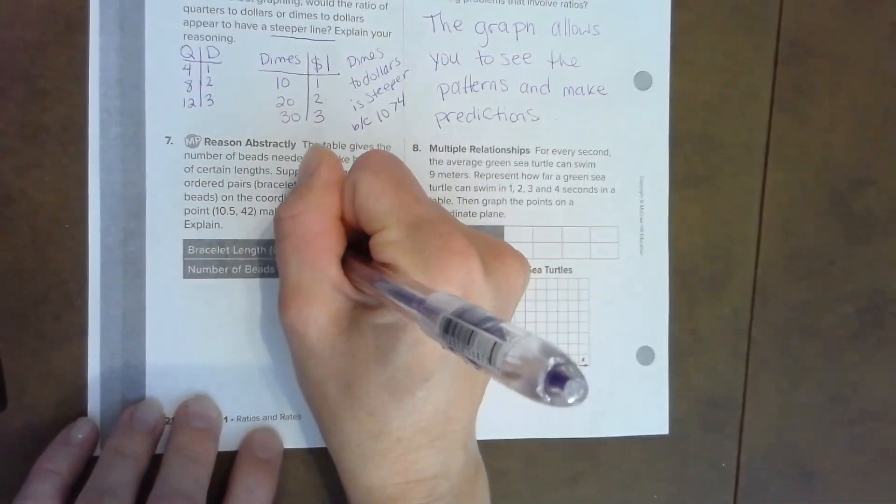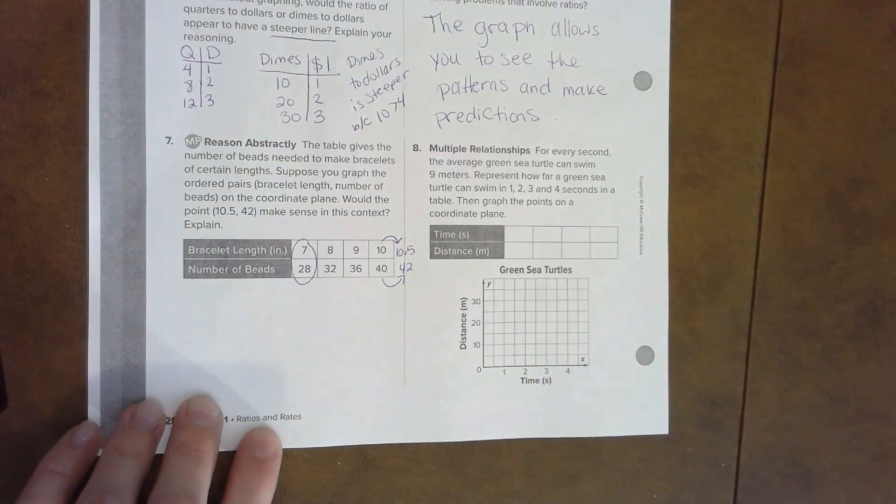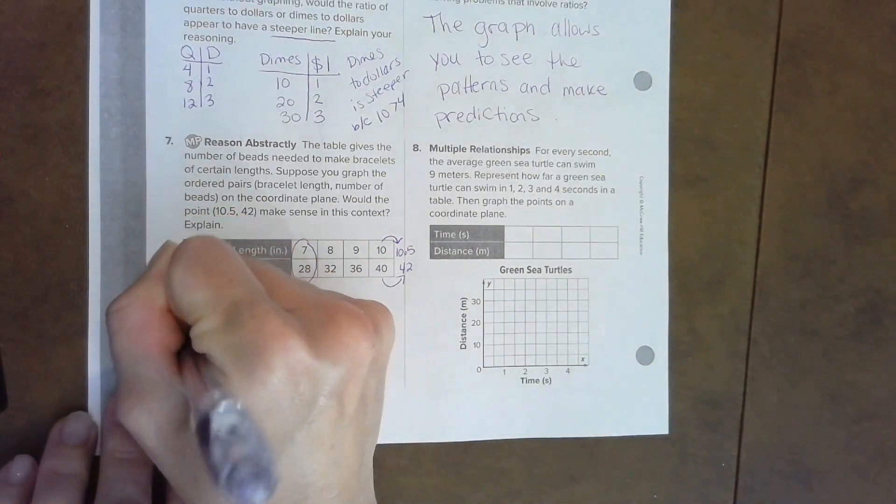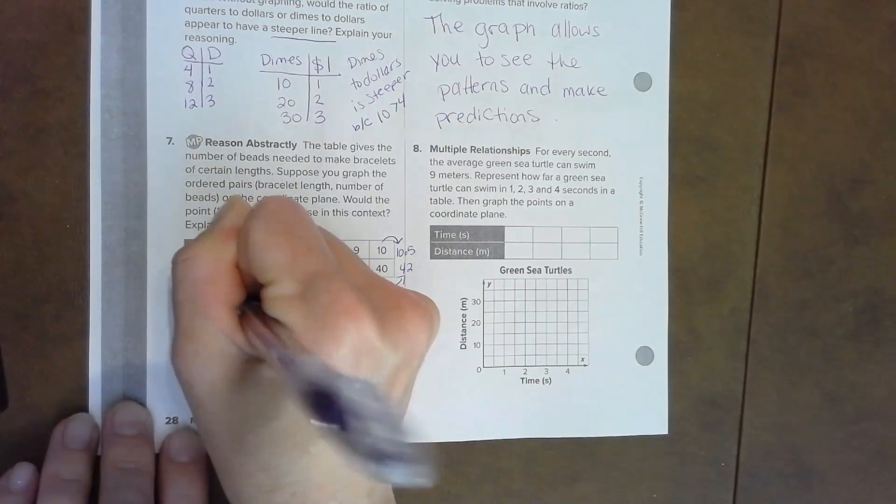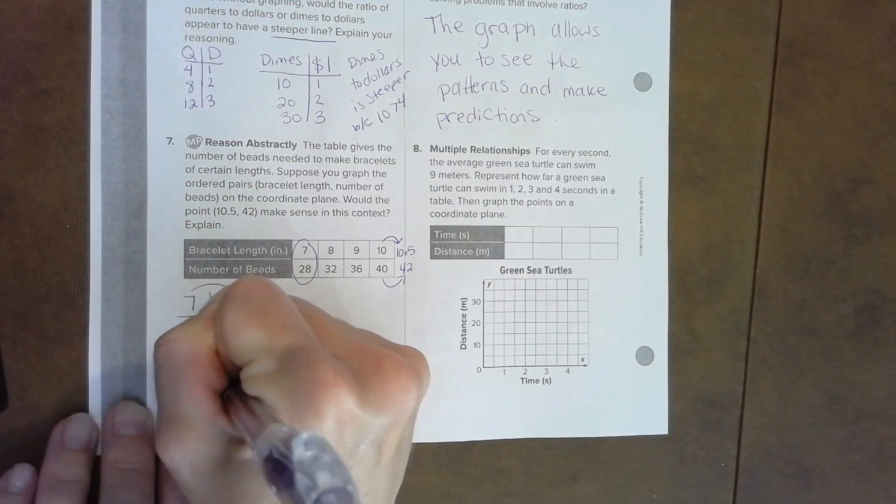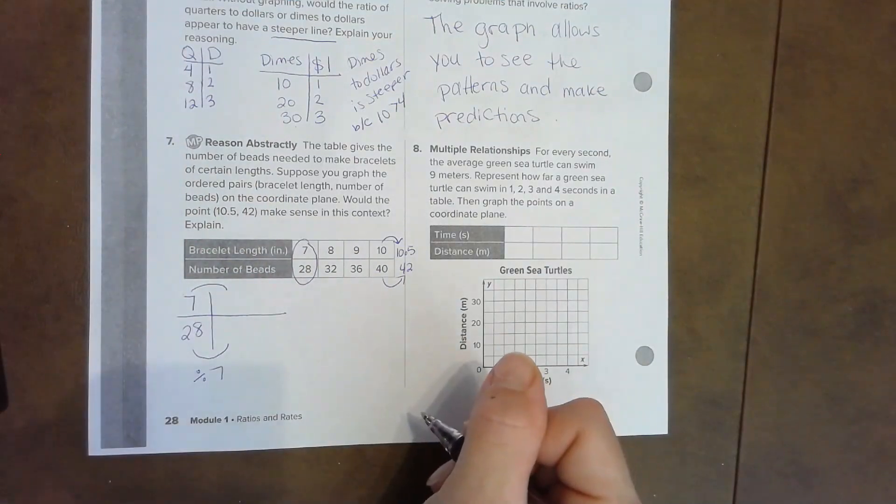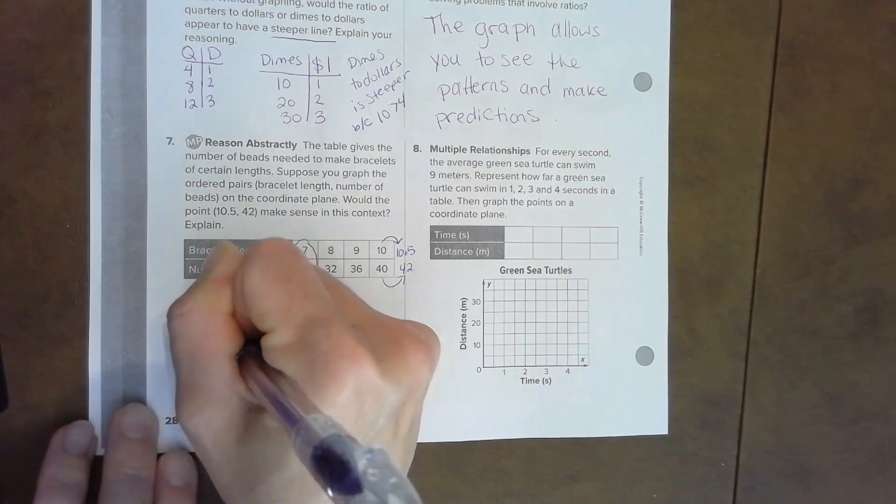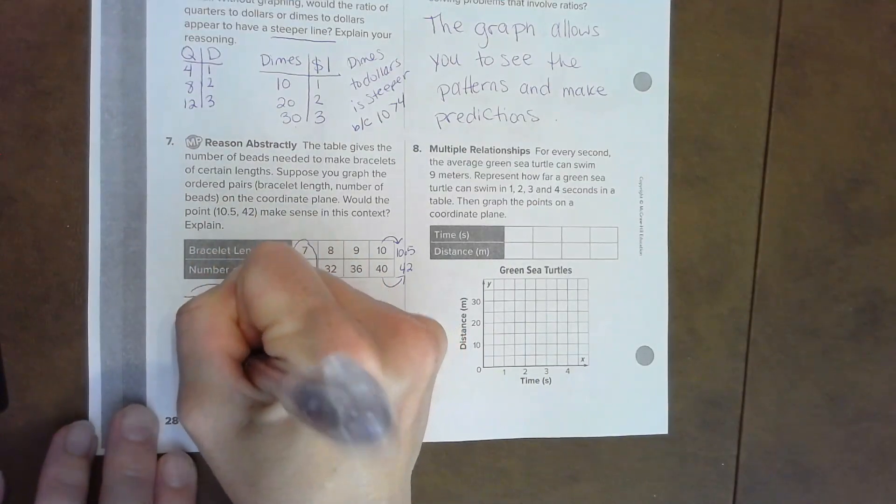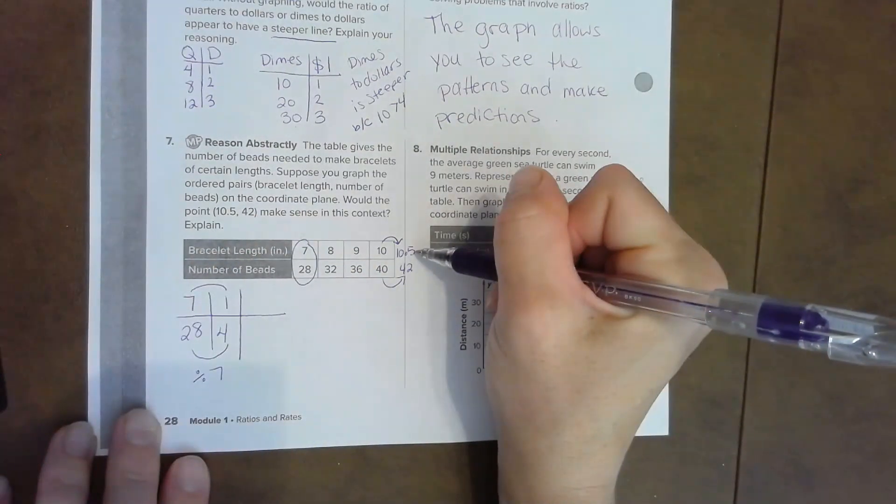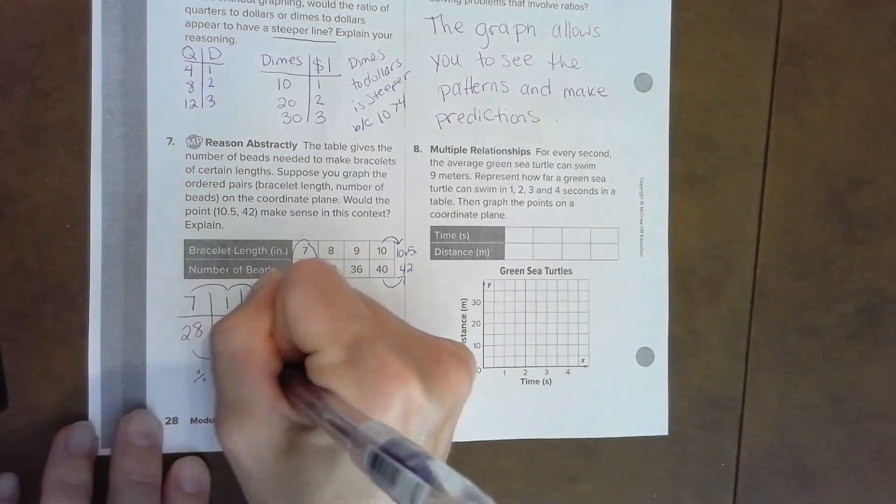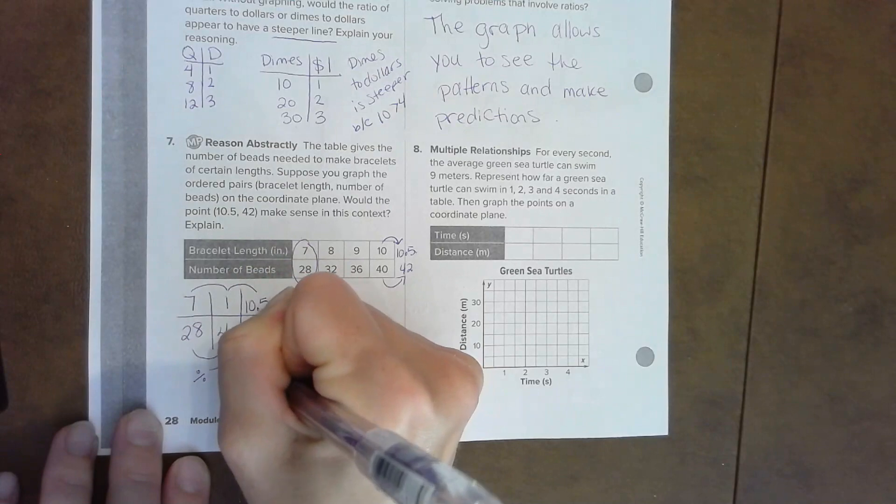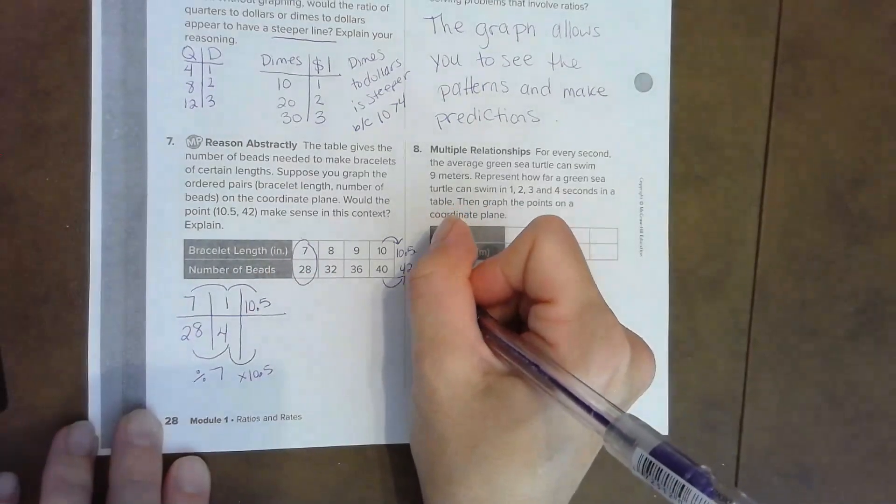We need to take this first one, seven to twenty-eight. We're going to use that. We're going to scale it back: seven to twenty-eight. Let's divide by seven. When we do that, we get like a unit rate: one to four. Now that we have one to four, we can figure out how to go to ten point five. Well, one times ten point five is ten point five. If four times ten point five gets me forty-two, then I know that's correct.